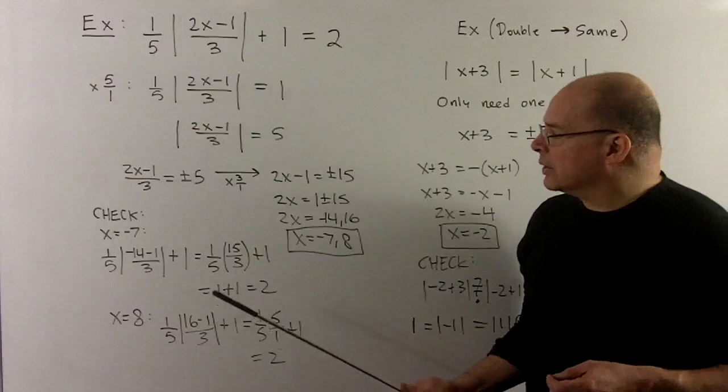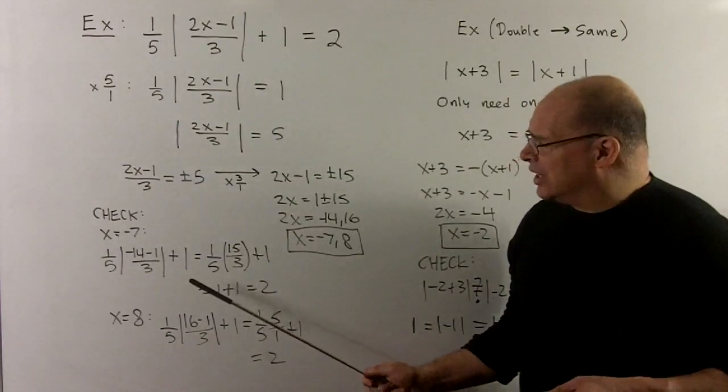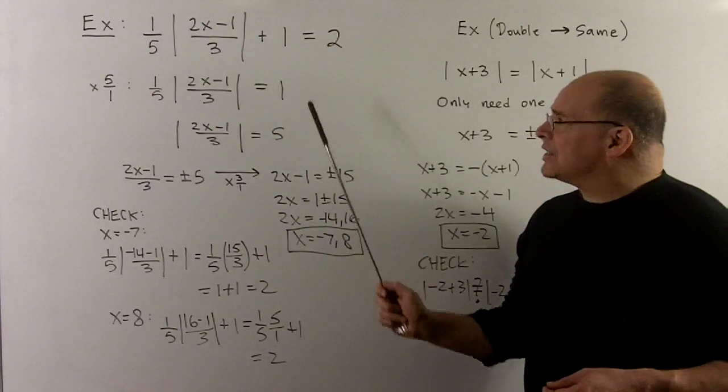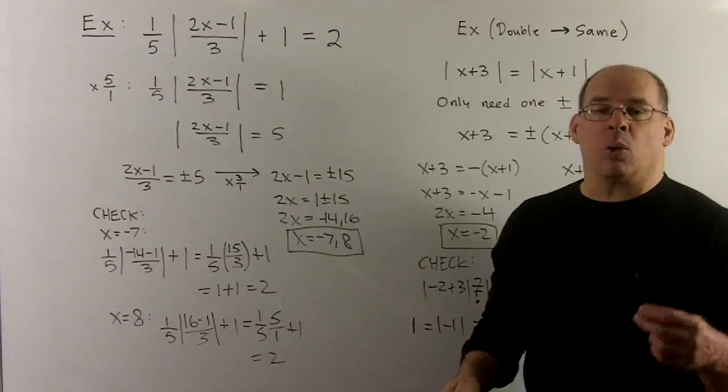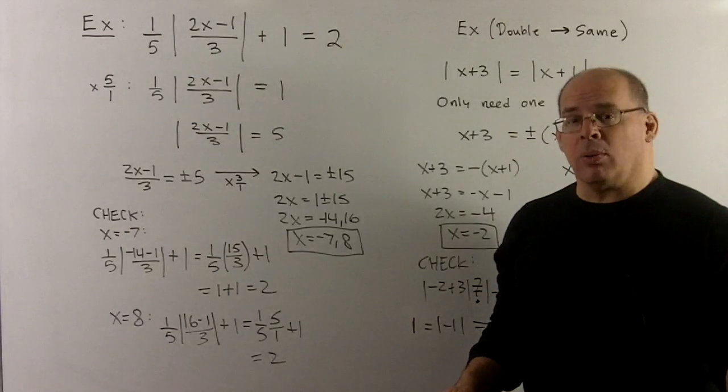Of course we want to check those, and so that's a little bit of arithmetic with fractions. So note what will happen when minus 7 goes in. In the numerator, we'll get a minus 14 minus 1 or a minus 15. Minus 15, we throw away the sign, we get a plus 15.